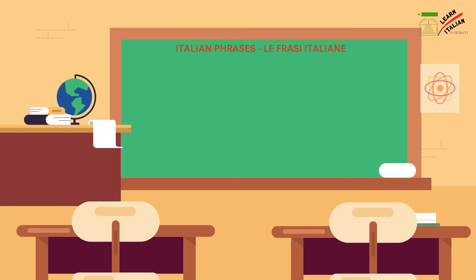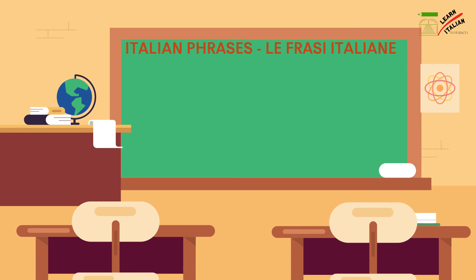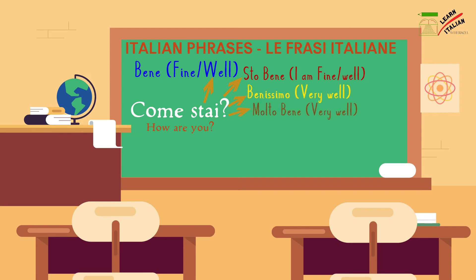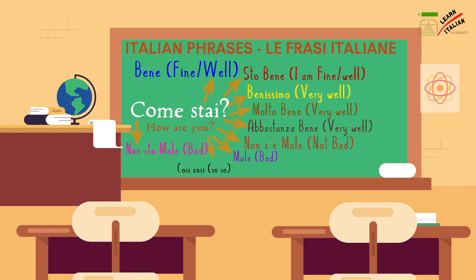Now let's look at some Italian phrases — le frasi italiane. When someone asks you 'come stai', it means how are you. You can reply in different ways: bene or sto bene (I'm well), benissimo (very well), molto bene (very good), abbastanza bene (quite well), non c'è male (not bad), male (bad), non sto bene (I'm not well), or così così (so-so).